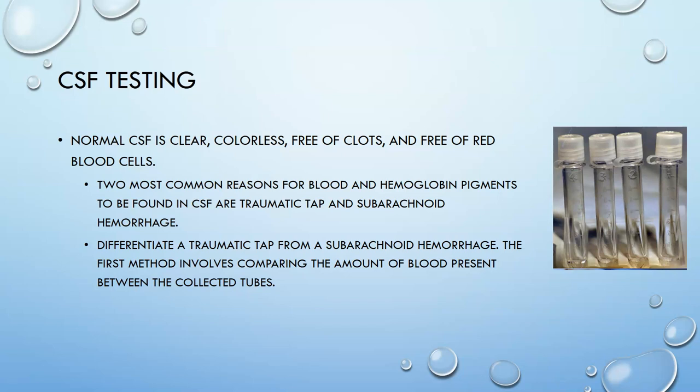Normal spinal fluid is clear, colorless, free of clots, and free of red blood cells — it should look like clear water. The two most common reasons for blood or hemoglobin pigments to be found in spinal fluid are the traumatic tap and the subarachnoid hemorrhage, or some kind of bleed such as a spinal cord bleed.